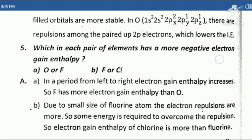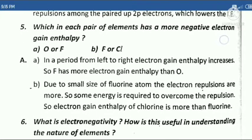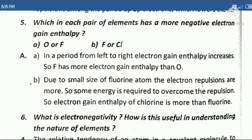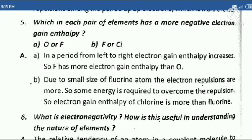Fifth question: Which in each pair of elements has a more negative electron gain enthalpy? A. O or F, B. F or Cl, N.